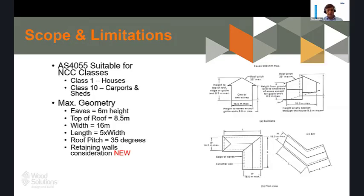Let's start with the scope. In the same way 1684 sets up the scope, AS4055 aligns — it's around Class 1 houses and Class 10 buildings. It is also applicable without legal ramification for buildings and structures of similar size and shape, but to comply with the NCC these are the two classes it covers. The geometry hasn't changed much from the previous version — a little bit of change on height.